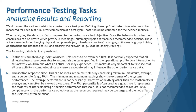These actions may include changing physical components like hardware or routers, changing software such as optimizing applications and database calls, or altering the network through load balancing or routing. So the outcome could be any action items derived from the performance inferences — you define the recommendations and required actions based on the analysis.